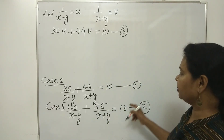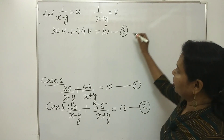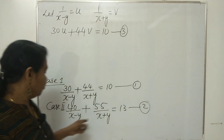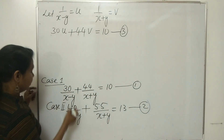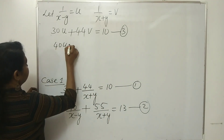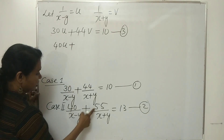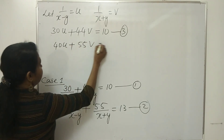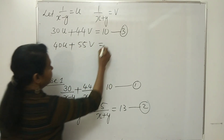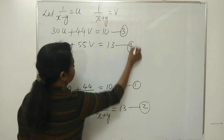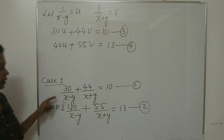Equation number 2 becomes 40u plus 55v equals 13. This is equation number 4.